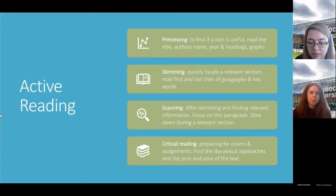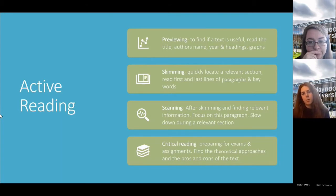So then active reading. The purpose of active reading. You're previewing to find if a text is useful. Read the title, author's name, year and the headings or graphs. Then skimming. You're quickly locating a relevant section. Read the first and the last lines of paragraphs and keywords. Then for scanning, after skimming and finding relevant information, focus on this paragraph. Slow down during a relevant section. And then for critical reading, you're preparing for exams and assignments. Find the theoretical approaches and the pros and cons of the text. Here's the four different types of active reading. Depending on what your purpose of the reading is, you'll be doing different types.